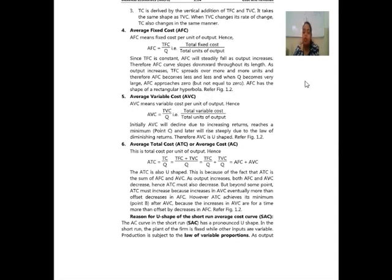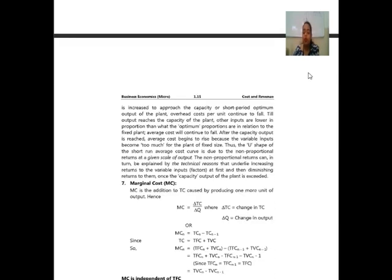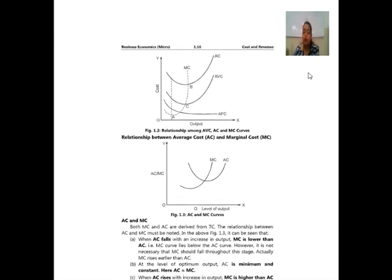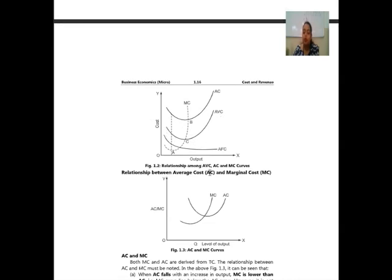Next we have average variable cost (AVC). Average variable cost means cost per unit of output: AVC = TVC / Q. Initially, average variable cost will decline due to increasing returns, reaches a minimum point C, and later will rise steeply due to the law of diminishing returns. Therefore, the AVC curve is U-shaped, as shown in figure 1.2.